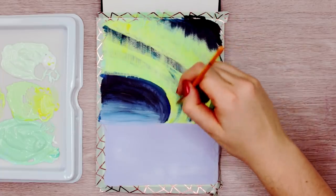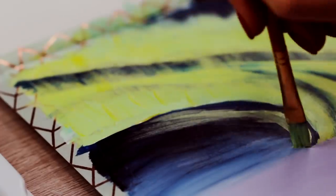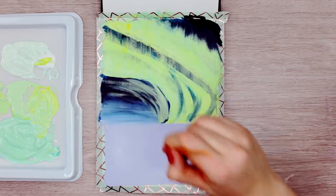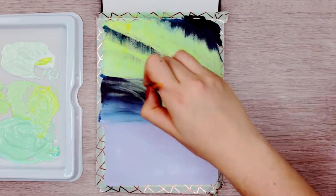This might take some practice if you're totally new to this technique. I also used the leftover paint on the brush to add even more lines below the big green areas to add even more light to the sky because I felt like the blue area looked too empty.